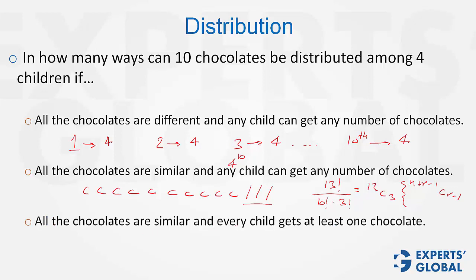One more, chocolates are similar and each child gets at least 1 chocolate. So now, same thing, 10 chocolates. We have to make 3 cuts, but then first, we have to make sure that everybody gets at least 1 chocolate. So we give 1 chocolate to each child. This can be done in, of course, only 1 way. Chocolates are similar.